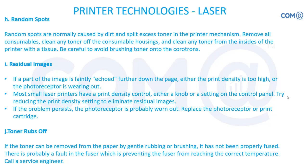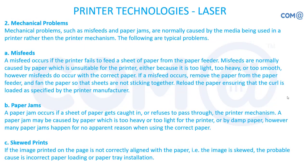Toner rubs off: if the toner can be removed from the paper by gently rubbing or brushing it, the toner has not been properly fused. You need to check the fuser unit — possibly the fuser lamp is not working or it is not reaching the correct temperature. If the fuser unit cannot be checked independently, take the printer to a service center.